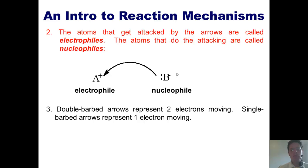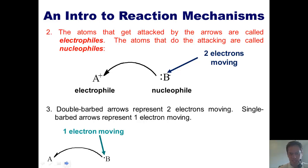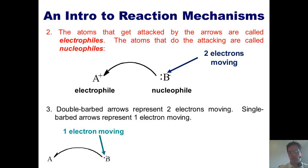Step three: double-barbed arrows represent two electrons moving, while single-barbed arrows represent one electron moving. In this particular example, because I've got two barbs on the end of this arrow, it means there are two electrons moving. If I have a single electron moving, I draw a single-barbed arrow, like a fish hook. For now, don't worry about single-barbed arrows — we will not look at them for a while, though we will in a later chapter.